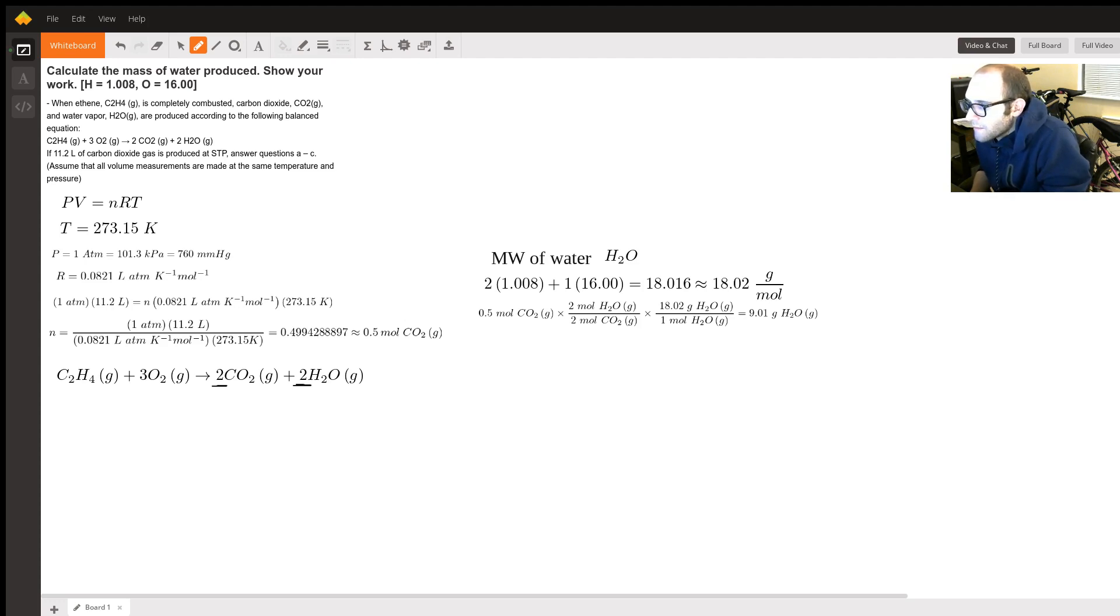So if 11.2 liters of carbon dioxide gas is produced at STP, which is standard temperature and pressure, calculate the mass of water produced.